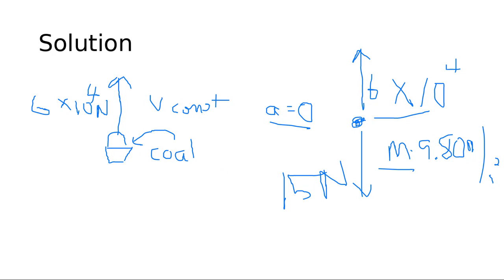Molly has a question: can you explain the image with the upward and downward forces again? Sure. The rope pulls up, but we know the rope will break if the downward force is more than 6×10⁴ Newtons. That's the maximum tension the rope can handle. Going down, you have the weight of the bucket and the weight of the coal. That's the tension.